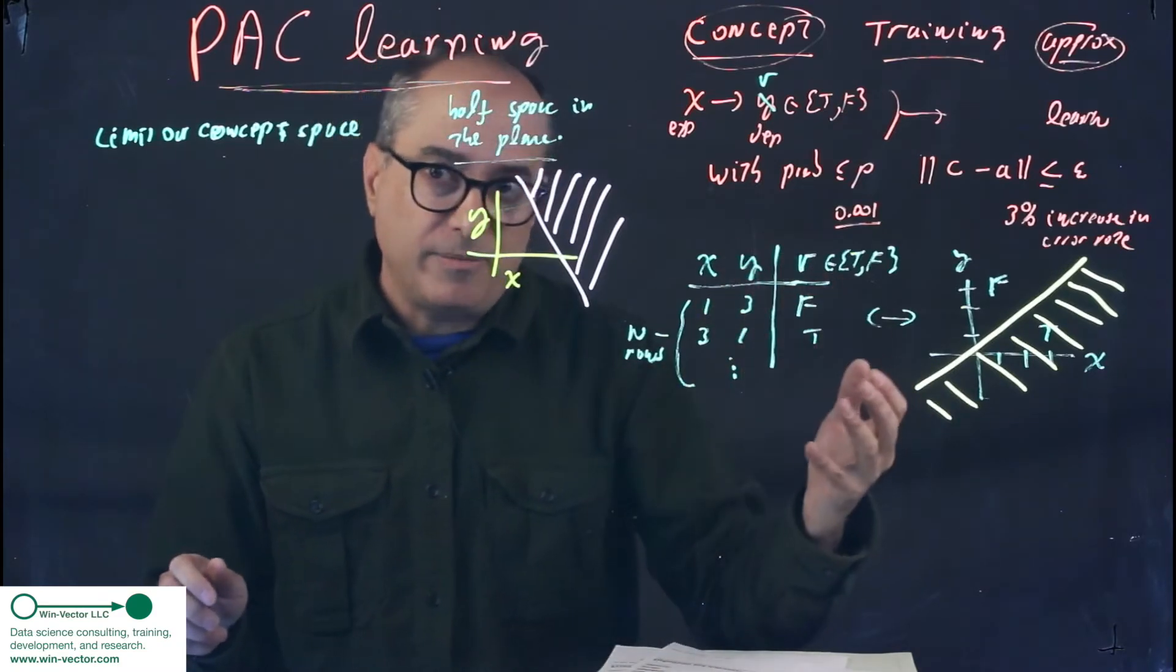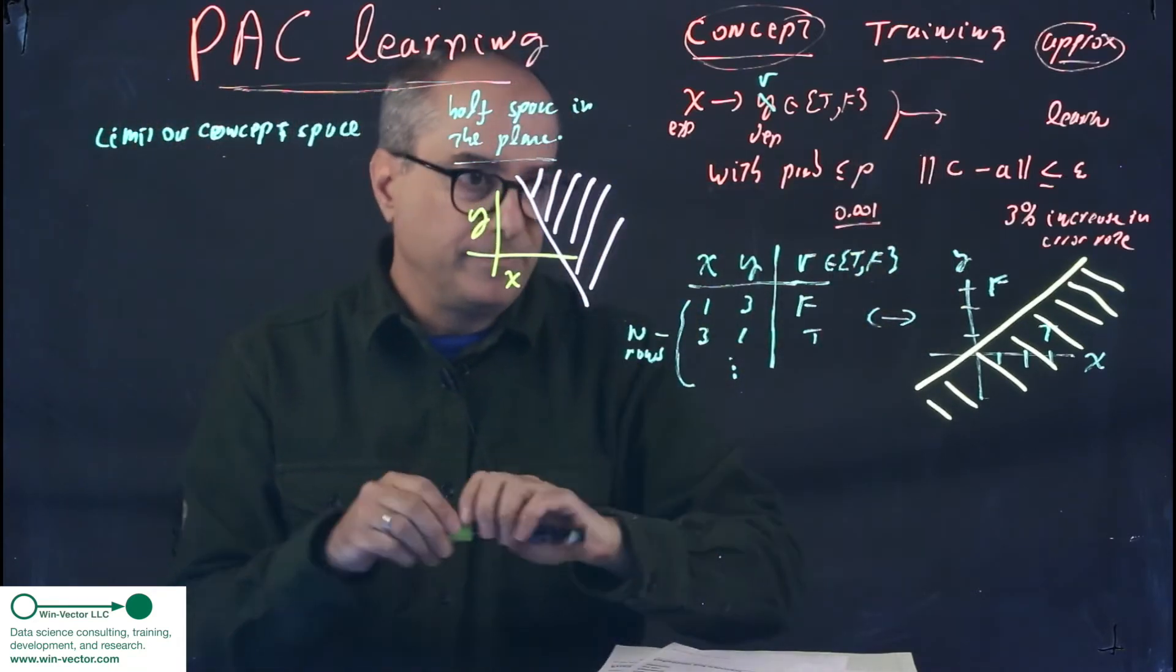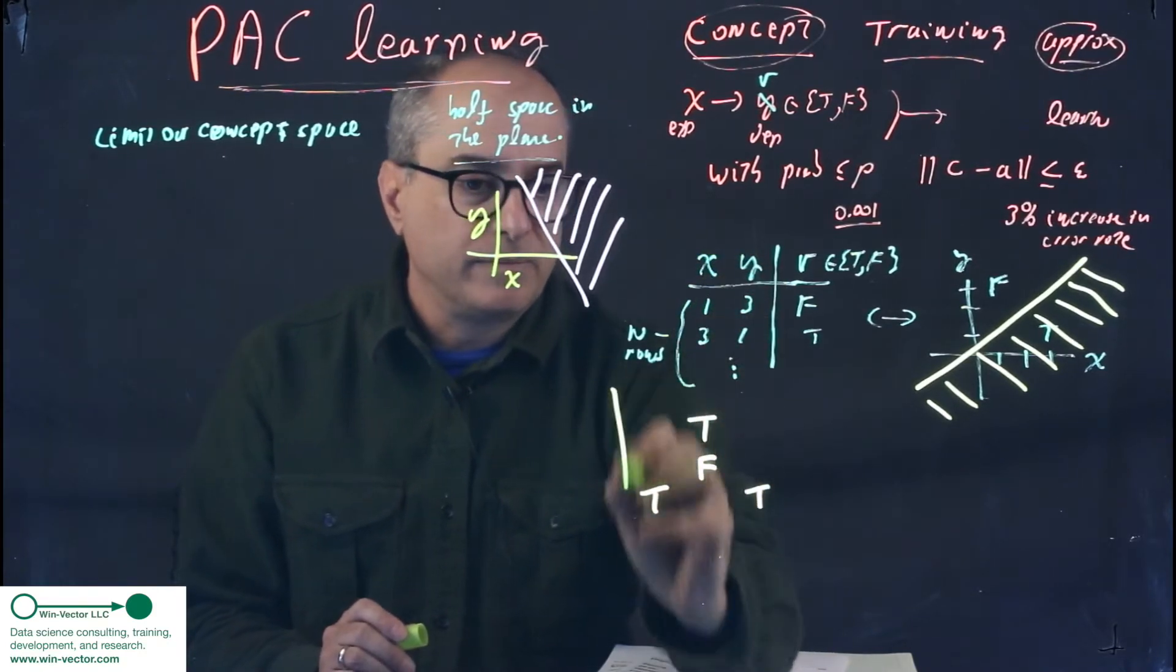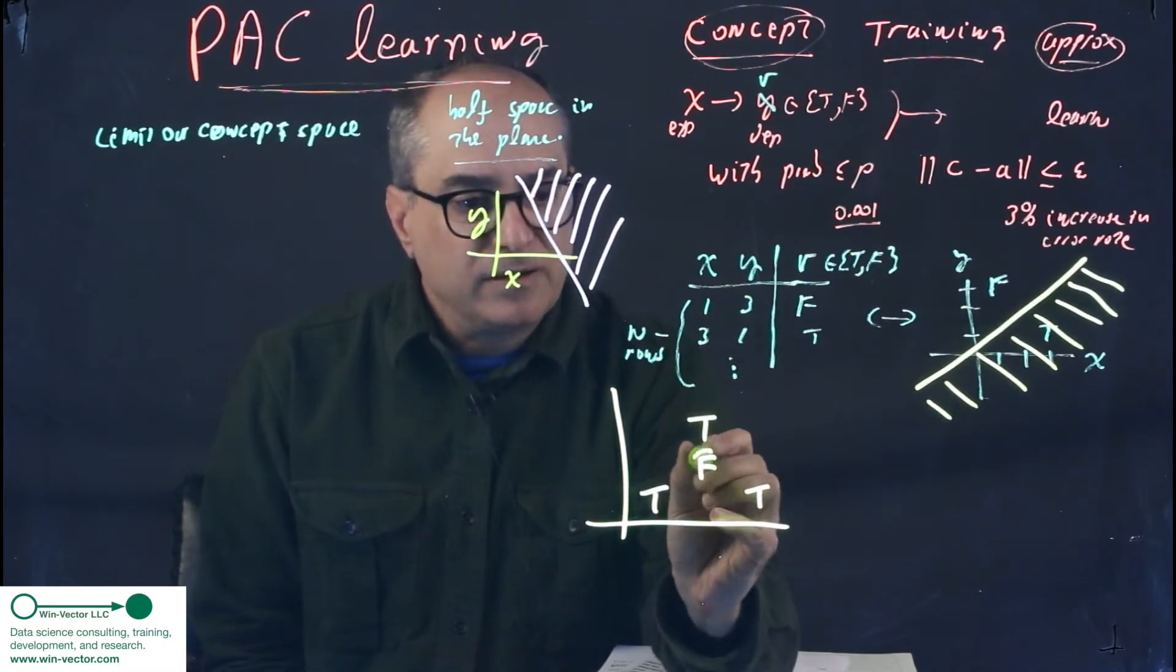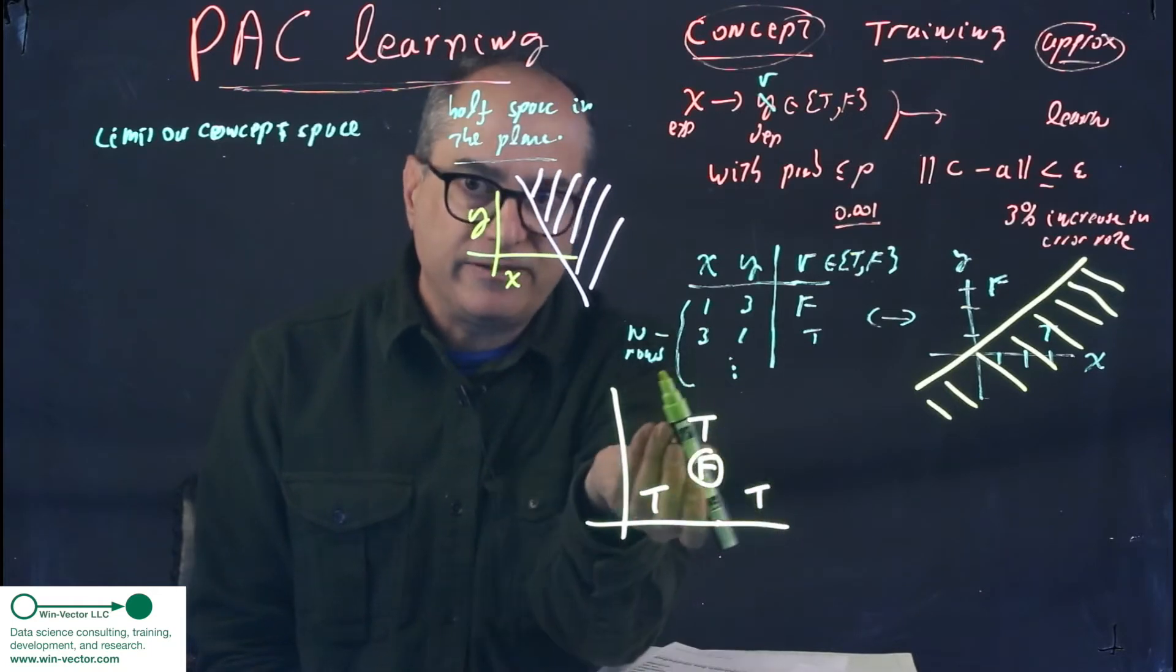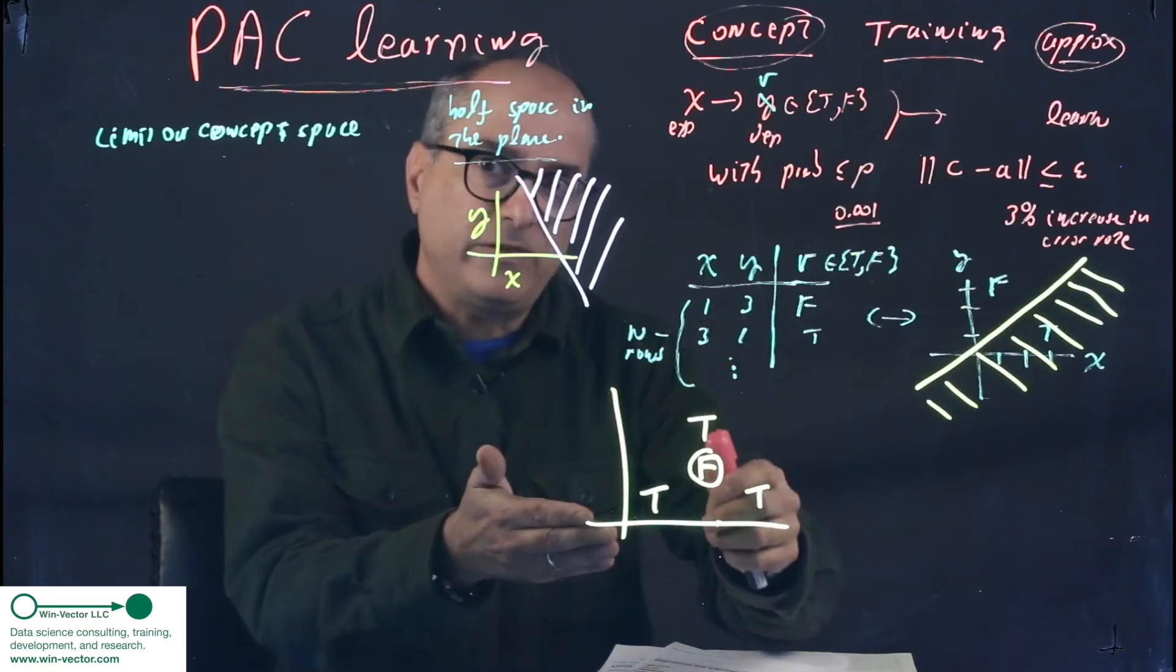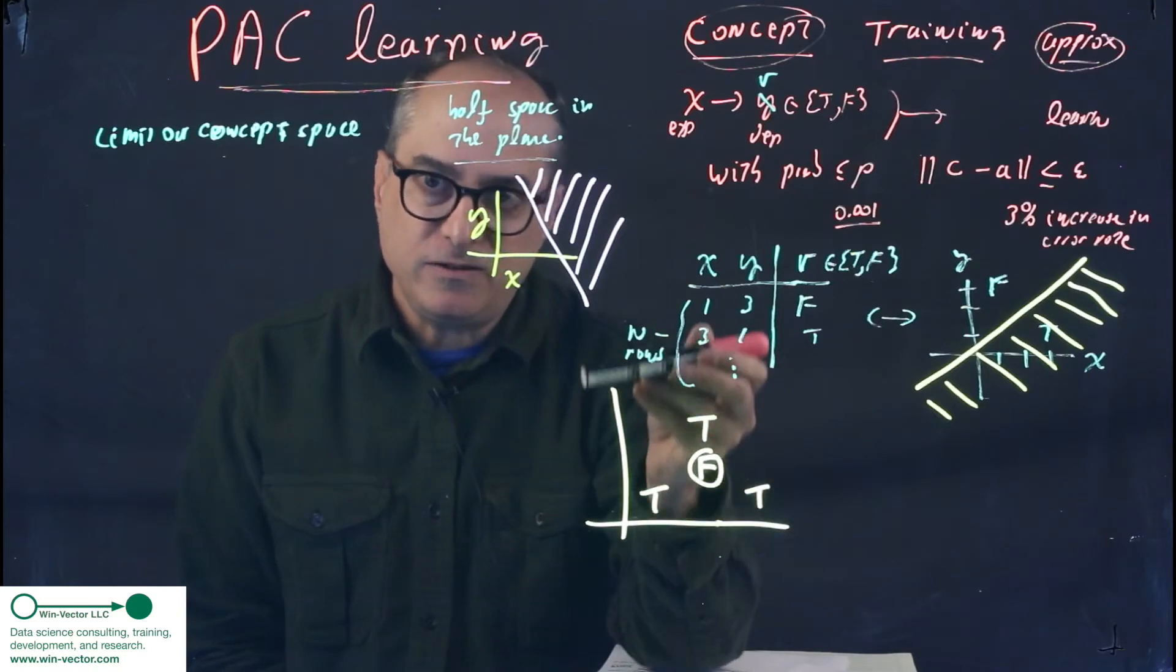Now, there are concepts that are unlearnable to this representation. For instance, here's one, again we're in the plane. There's no line that separates this f as a half space from all the trues. No matter how we cut, the side that has f has some trues in it, maybe at least one. And that's actually a geometric fact. There is no set of four points in the plane that can be separated by a half space.